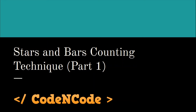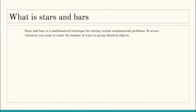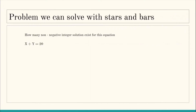Hello guys, this is CodeEncode and this is a lecture on the Stars and Bars counting technique. This technique is used in combinatorics for a specific kind of problem. Stars and Bars is a mathematical technique used for solving certain combinatorial problems — it targets only a specific kind of problem, occurring whenever we want to count the number of ways to group identical objects. Let's take an example to understand what kind of problem Stars and Bars targets.